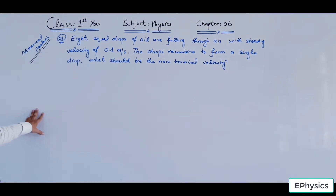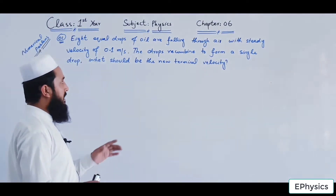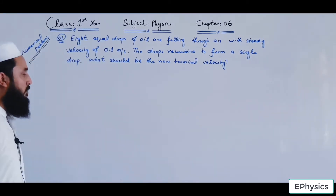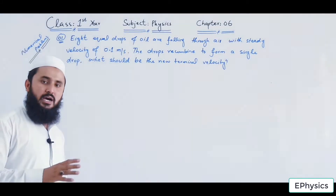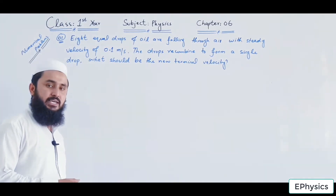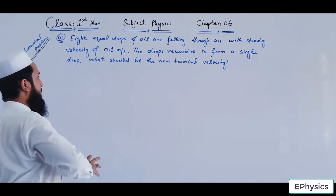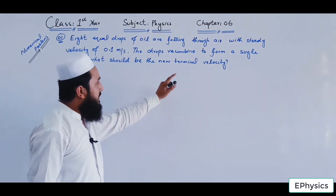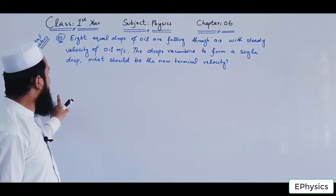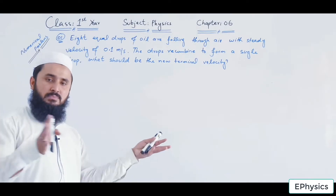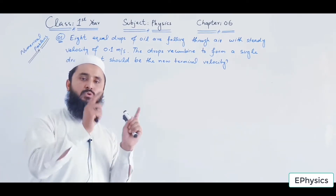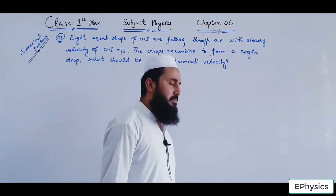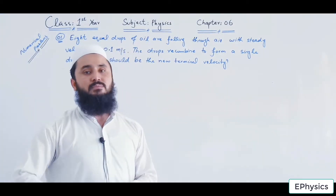The first numerical: 8 equal drops of oil are falling through air with a steady terminal velocity of 0.1 meter per second. The 8 oil drops are identical. The drops recombine to form a single drop. What should be the new terminal velocity?